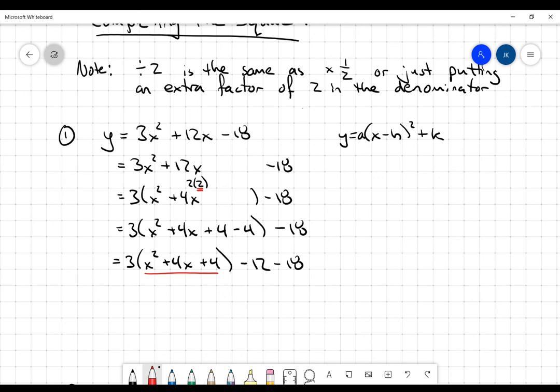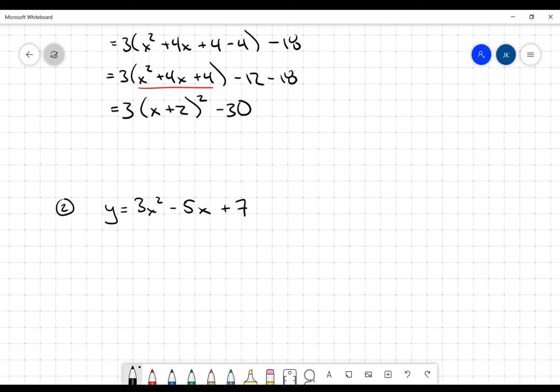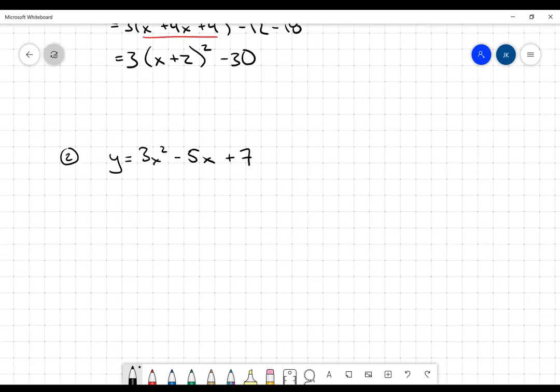The benefit is that the leftover trinomial is a perfect square that can be factored as (x + 2)². Negative 12 minus 18 is minus 30. Now it's in the form I wanted. I've completed the square. The numbers worked out nicely. Let's look at one where they don't work out nicely.